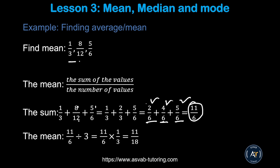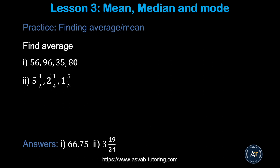How many fractions are there? There are 3 fractions, so you have to divide by 3. Remember how to divide a fraction: keep, change, flip. Keep whatever you have, change the division sign to multiplication, and then flip it. Once you find that, multiply top to top, bottom to bottom — that gives you 11 over 18. There are a couple of practice problems; try by yourself and make sure you get the same answers: 66.75 and 3 and 19 over 25.